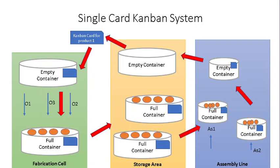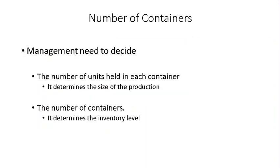One important decision that management has to take is: what is the number of containers that optimizes the process? And what is the number of units that each container should hold? These two decisions determine the size of production and the inventory level. The more containers, the more inventory we need to keep. And the more units in every container, the larger the production lot size.